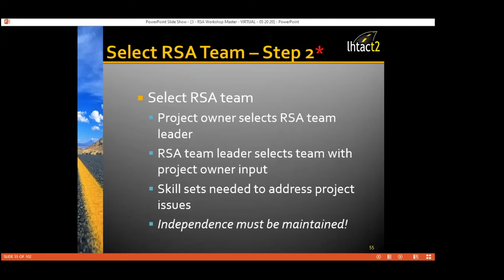The RSA owner selects the team leader. Individuals representing other areas of specialty may be considered depending on the type of project — maintenance, enforcement, first responders — the Fab 3 that should always be part of an RSA. Areas of specialty depend on what phase you're doing: pre-construction may need design people; during construction you may need construction people; post-construction, those who operate and maintain the highway. The Fab 3 should always be present, and independence needs to be maintained.